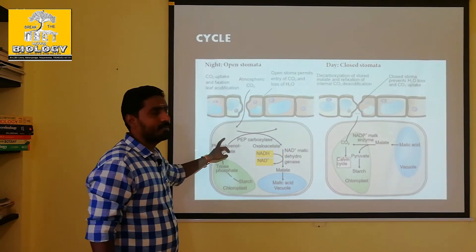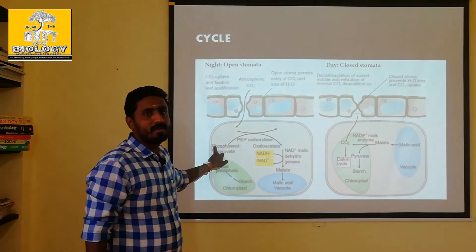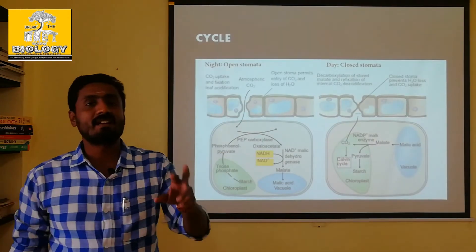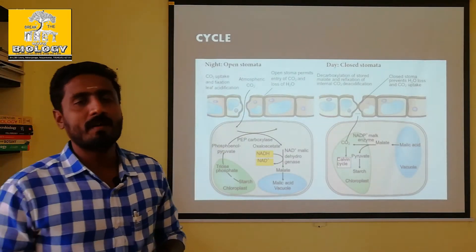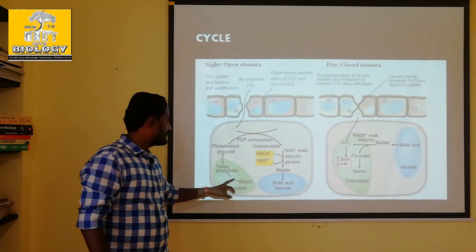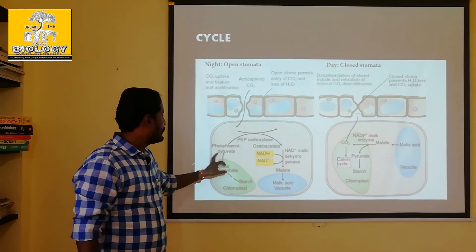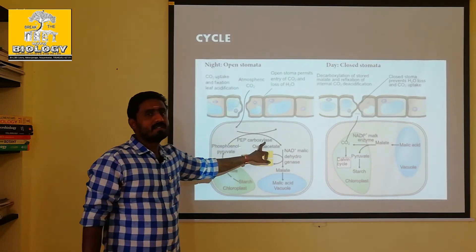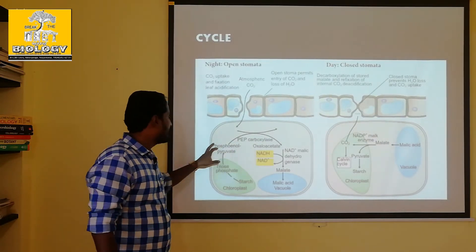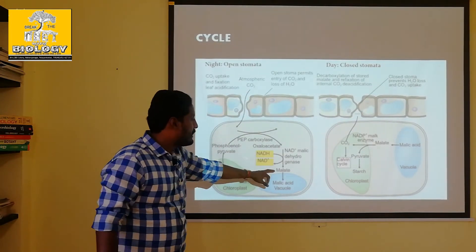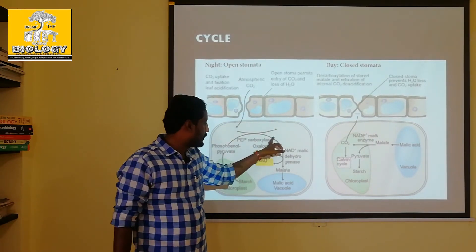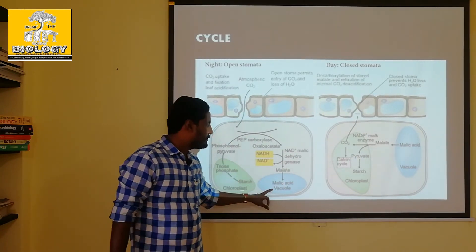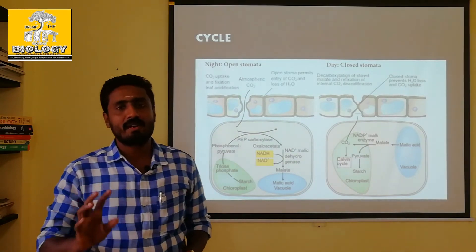At night time, starch is converted to triose phosphate and then to phosphoenolpyruvate (PEP) — this is the last step in glycolysis. You know phosphoenolpyruvate, and the phosphoenolpyruvate carboxylase enzyme acts on PEP with carbon dioxide to produce malic acid. The malic acid is then stored inside the vacuole to be used during the daytime.